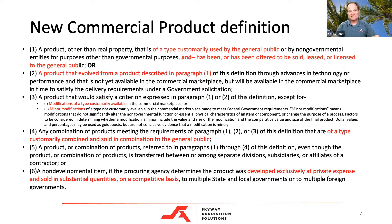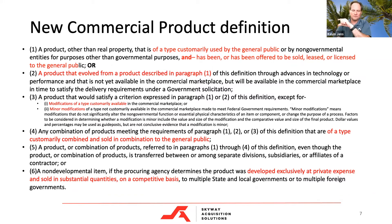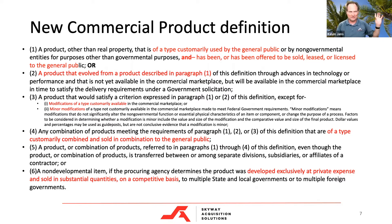Paragraph five is a combination of products referred to in paragraphs one through four, even though the product or combination is transferred between or among separate divisions, subsidiaries, or affiliates of a contractor. That's targeted to large organizations. If it's an aircraft that Boeing sells commercially, just because they're selling it through the military arm of Boeing, this is what I would use to say it's still a commercial item.